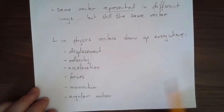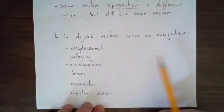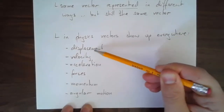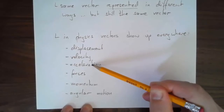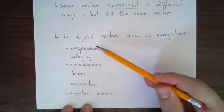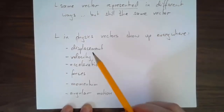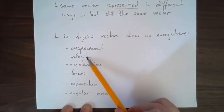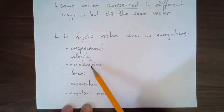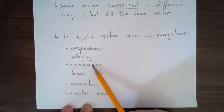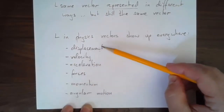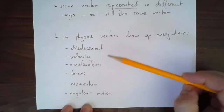Vectors are indeed everywhere in physics. Displacement, velocity, and acceleration vectors are all things that have a magnitude and a direction. How far has something been displaced and in what direction? How quickly is something going and in what direction? What's the rate of acceleration and in what direction? These things require direction to be a complete specification.